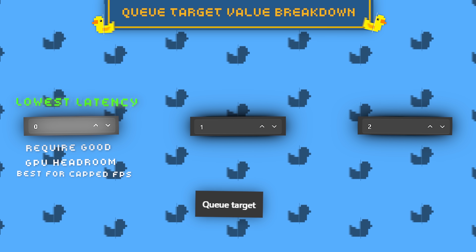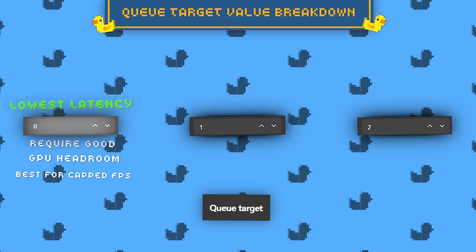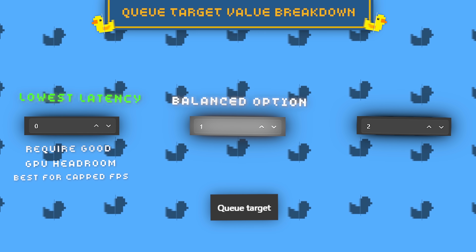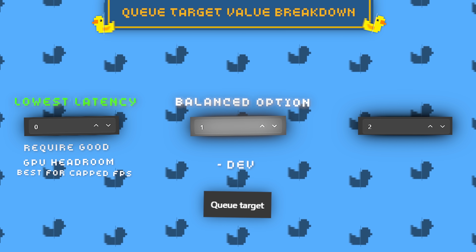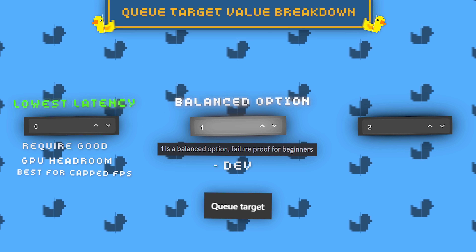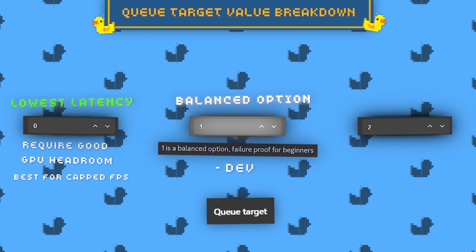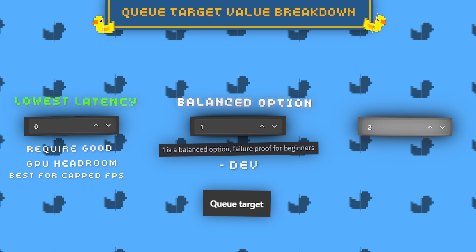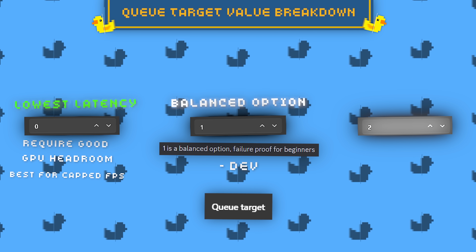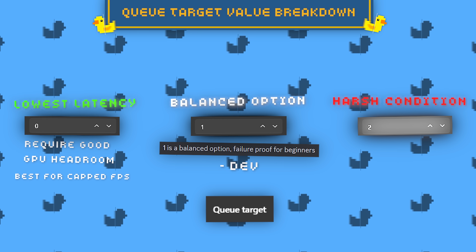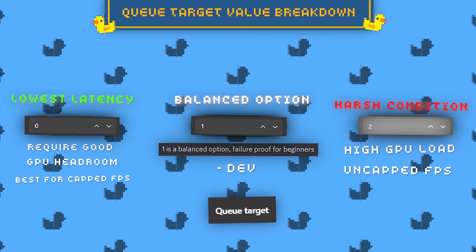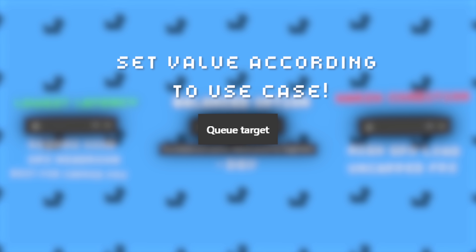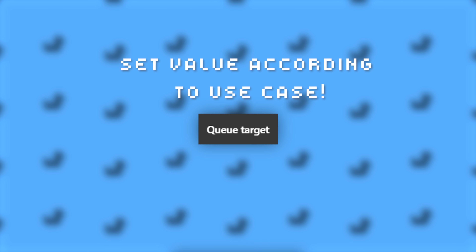Zero is my choice for fixed mode because I usually cap the game in the cinematic range of 30 to 40 FPS, leaving me with big GPU headroom. One is the balance between latency and frame generation performance — in the words of the dev himself, the safe new user-friendly leave-it-out-of-the-box option. Two is for using Lossless Scaling with harsh conditions such as unstable, uncapped base FPS and high GPU load. Set the value depending on your need.